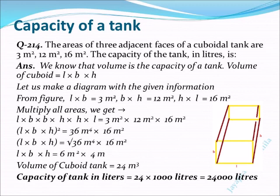Therefore, L×B×H equals the square root of 36 m² times 16 m². Root 36 is 6 m², root of meter raised to 4 is meter squared. Root 16 is 4, root m² equals m. So L×B×H equals 6 m² times 4 m. Therefore 6 times 4 is 24 m²×m, which equals 24 m³.